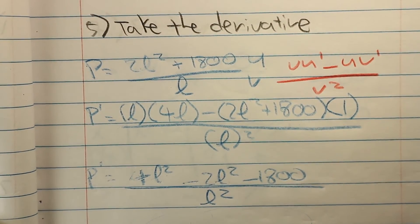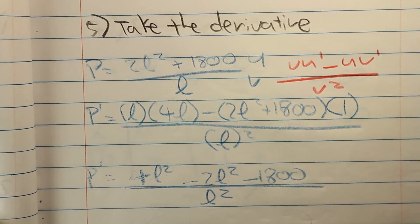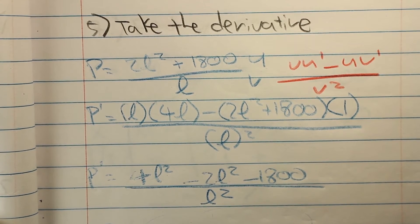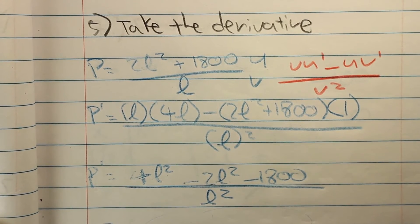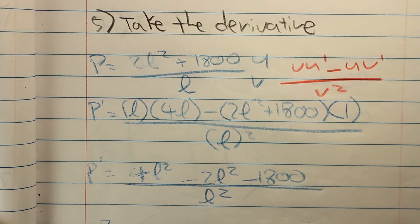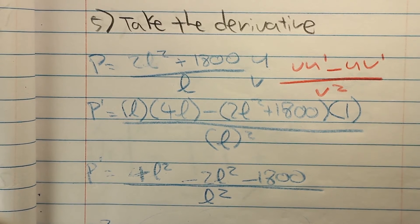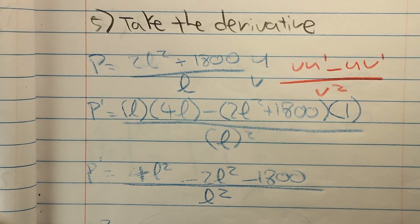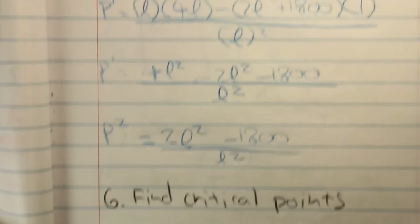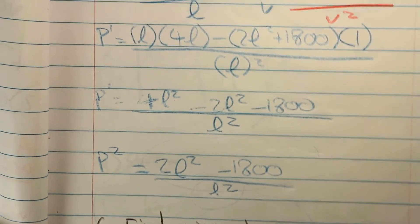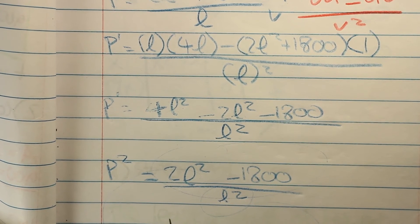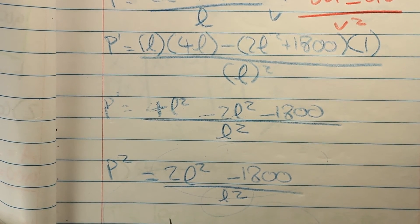Step 5, you want to take the derivative of this problem, of the perimeter in this case, and doing so we will be able to find the minimum later on. 2L squared plus 1800 over L is a division problem, and you will need to use the quotient rule to get the derivative. After you go through the processes, eventually you will see that the derivative of the perimeter is 2L squared minus 1800 over L squared.